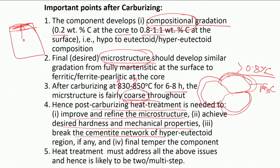So if you already create such a network, then you cannot do machining or any post processing. This is not desirable and also creates a sort of conflict with the martensitic post heat treatment microstructure. So in order to break this hyper-eutectoid microstructure or cementite network, we also need a follow-up heat treatment.